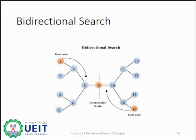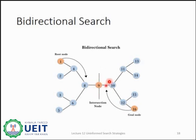In this example, the bidirectional search algorithm is applied. This algorithm divides one complete graph into two subgraphs. It starts traversing from node 1, the root node, in the forward direction. And starts from the goal node, which is node 16, in the backward direction. The algorithm terminates at node 9, which is the intersection point — here is where the bidirectional search will end. The forward search and the backward search meet or intersect at this intersection node.